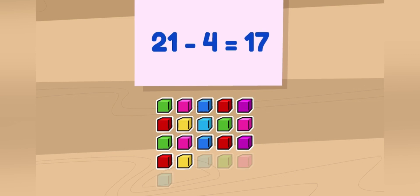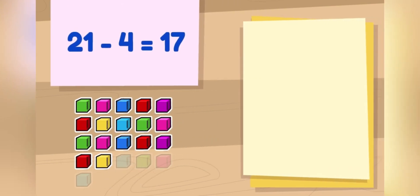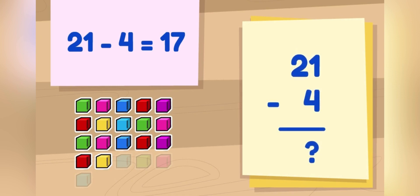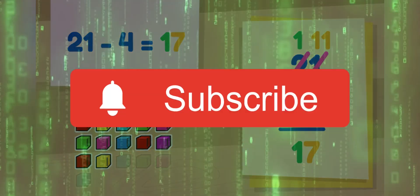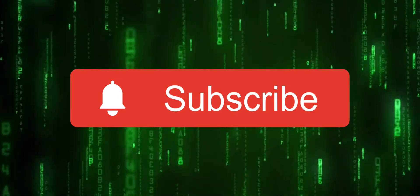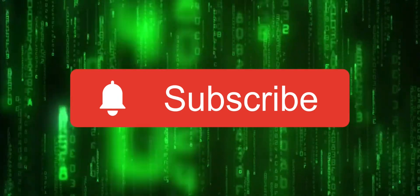There are 17 blocks left. Now let's solve it another way by subtracting from top to bottom. First, we subtract the 1's place from the top here to the bottom here. But we can't take away 4 from 1 because 4 is bigger than 1. That means we should borrow a 10 from the 10's place and bring it to the 1's place. Now we use the new number to subtract. 11 minus 4 equals 7. 1 minus 0 equals 1. 21 minus 4 equals 17.